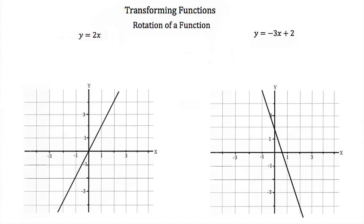The next type of transformation is a rotation. To rotate our function, we take our parent function and change the slope. Starting with y is equal to 2x, if we change the slope to make it y is equal to 3x and graph it, our y-intercept is still at 0, and we go up 3 and over 1. Because we increased our slope to 3, our graph is now steeper, as shown by the red line.